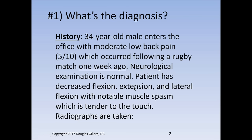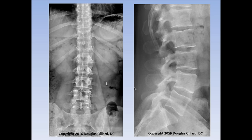Let's start with a case. What's the diagnosis? A 34-year-old man enters the office with moderate low back pain, 5'10", which occurred following a rugby match one week ago. Neurological examination is normal. Patient has decreased flexion extension, lateral flexion — so he's stiff. Some muscle spasm is noted. Tender to the touch. Radiographs are taken. I don't see anything significant — maybe a very slight asymmetry, under 10 degrees. No fractures. Check the PARS for lucencies. A surprising number of you missed this on the OSCE test — there was a huge fracture lucency right through there, so don't miss any PARS fracture.